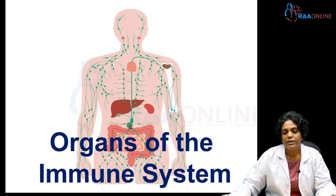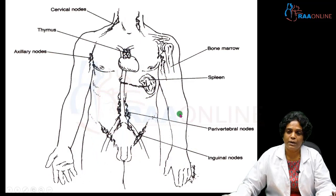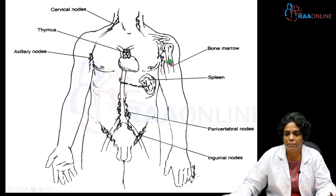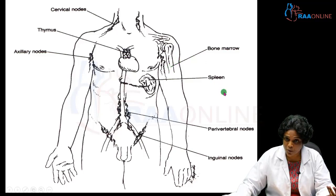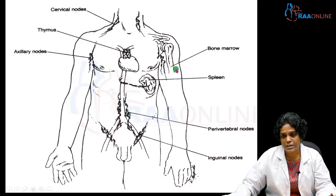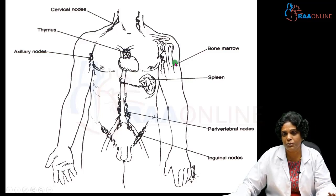Let's look into the organs of the immune system. These include the central or primary lymphoid organs — the bone marrow and the thymus — and the secondary lymphoid organs, the lymph nodes at various sites, and the spleen. We also have mucosa-associated lymphoid tissues like MALT and GALT, and the cutaneous-associated lymphoid tissue, which comes under the tertiary lymphoid organs.